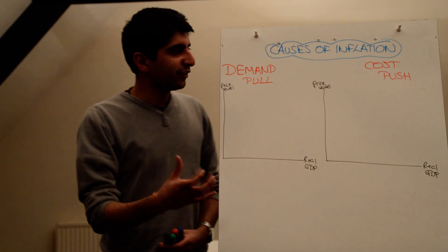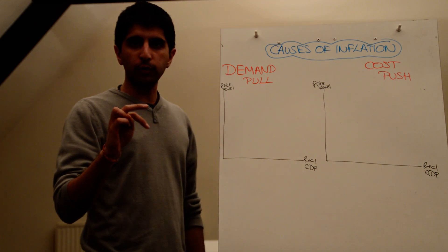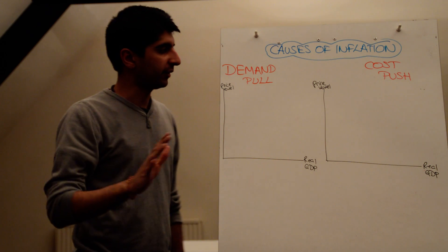So, when can inflation actually arise? What can cause inflation? There are two main causes of inflation: demand pull inflation and cost push inflation.